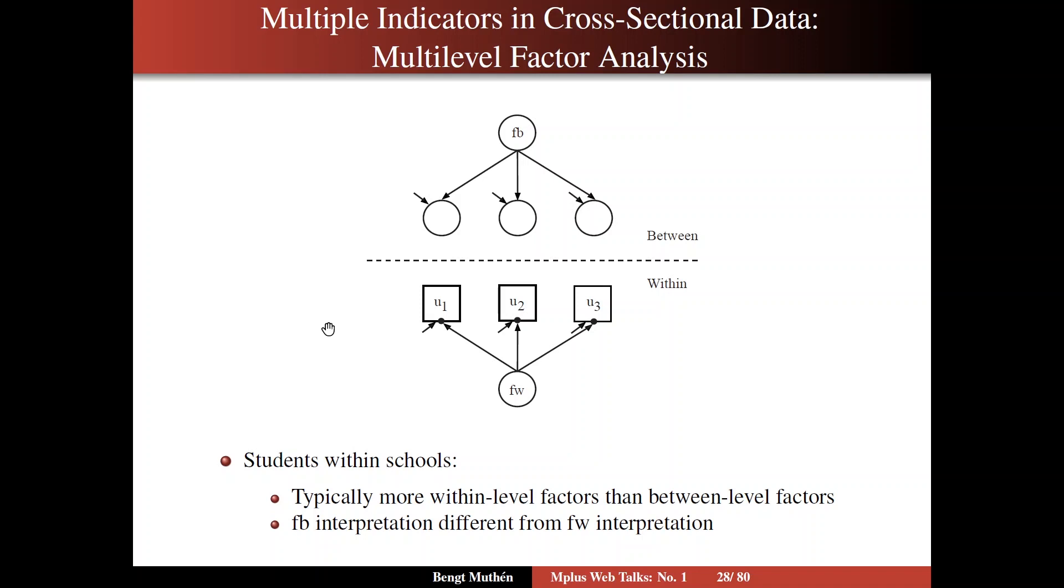So you can ask yourself, if you think back to the previous slides talking about random intercept factor analysis, perhaps you could then also add a random intercept factor on the within-level to represent variation across individuals, across students, that's common to all of the items. I don't know how relevant that would be. I don't know if that has been done.